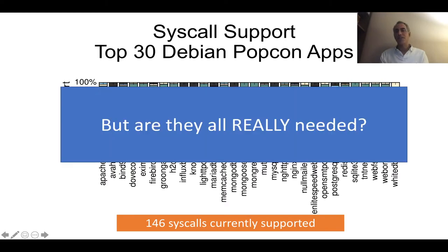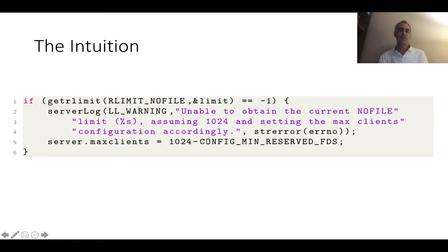But are all the syscalls that we analyzed really needed? The reason we asked this question is that from working with Unicraft over time, we noticed that sometimes when we didn't have any syscall support for an application that was using it in the source code, the application would still run fine. So we started to dig a little bit more as to why that was. The intuition is that you have a lot of snippets of code in applications — this is from Redis — that are resilient to the lack of an actual syscall. In this case, the syscall is getrlimit, and if the call is not there and it fails, then Redis defaults to a sane value. There's a lot of this in application code, so it turns out maybe you don't need all the syscalls that are in the source code to actually properly run the application.